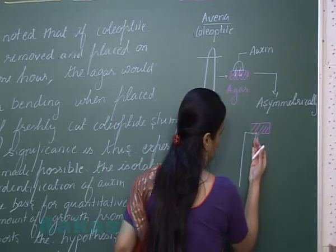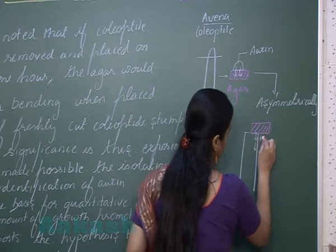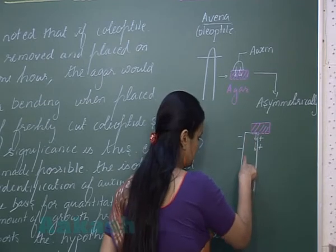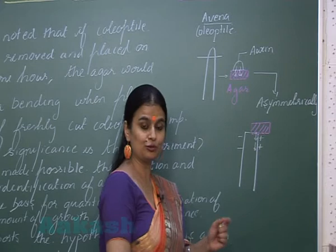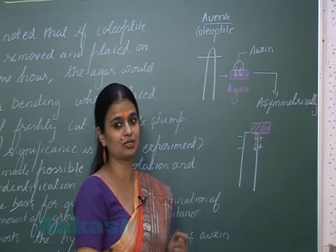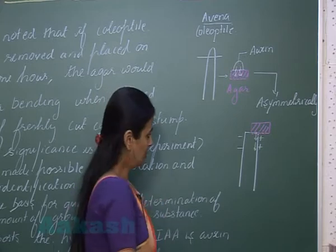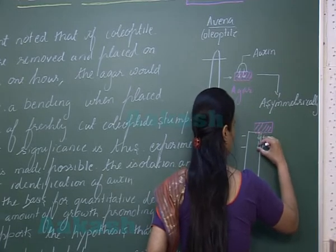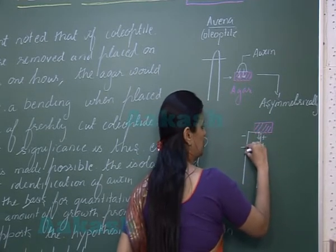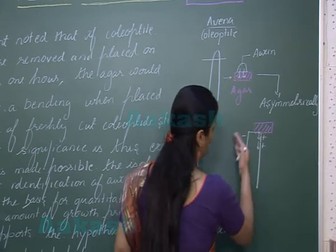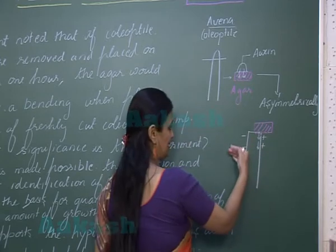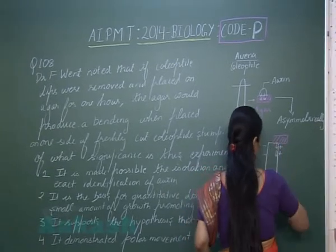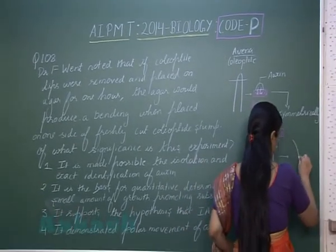So on this part of the Coleoptile stem the concentration of auxin is high, and on the other part the concentration is low. Since auxin is a growth hormone which results in cell elongation, on the high-auxin side growth and elongation are more, and on the other side elongation is less. This differential growth results in bending of the Coleoptile.